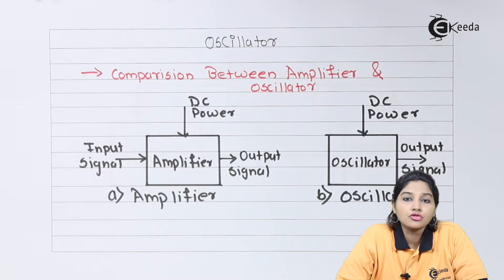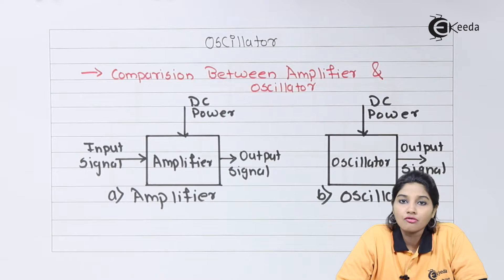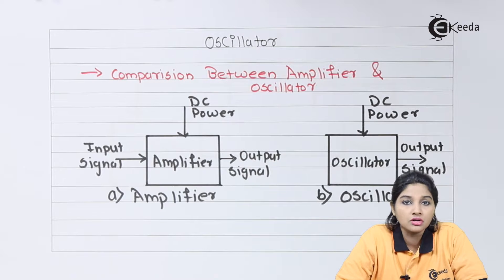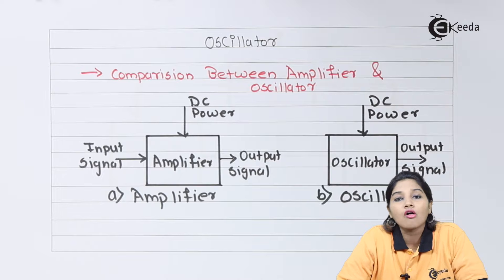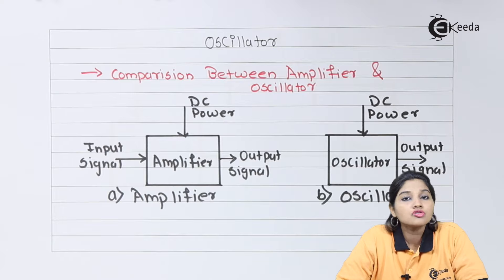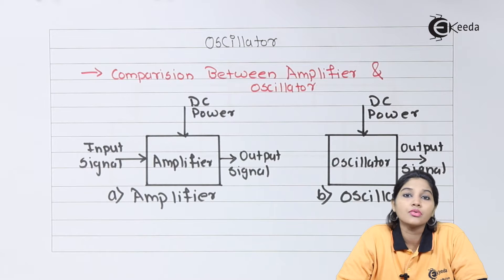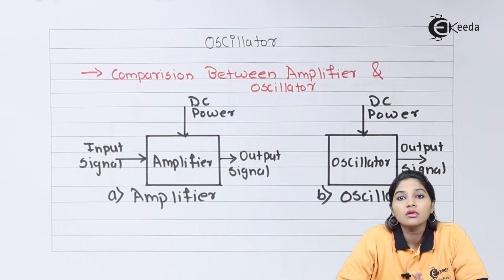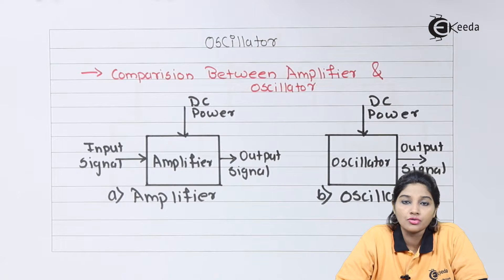Oscillators use positive feedback. Positive feedback is the feedback in which the output, or a part of the output, is given back to the input in such a way that it is in phase with the input signal, thereby increasing it. Such feedback is called positive, regenerative, or direct feedback. Because of positive feedback, the closed loop gain is higher compared to the open loop gain, causing the circuit to become unstable. This instability of the circuit causes the production of oscillations at the output.